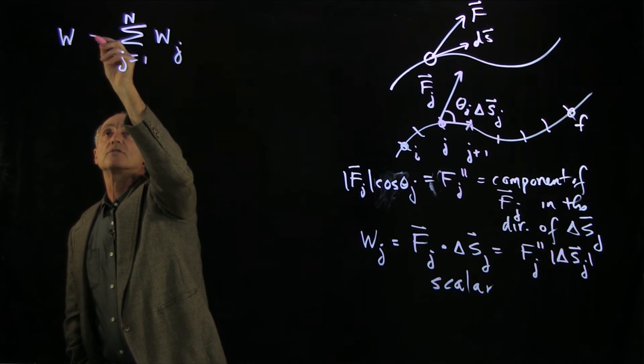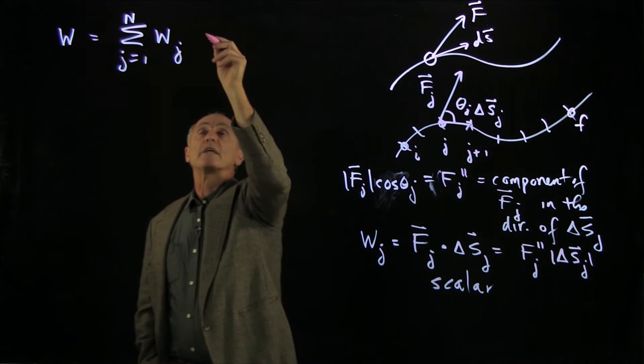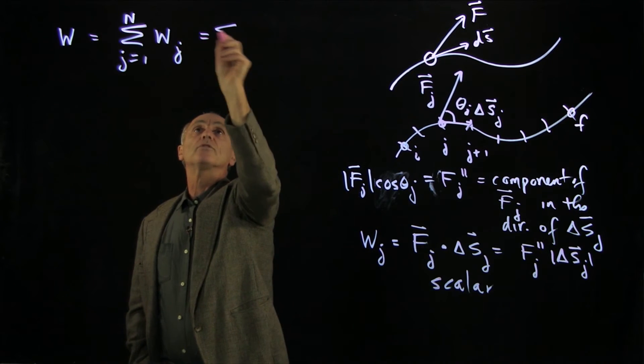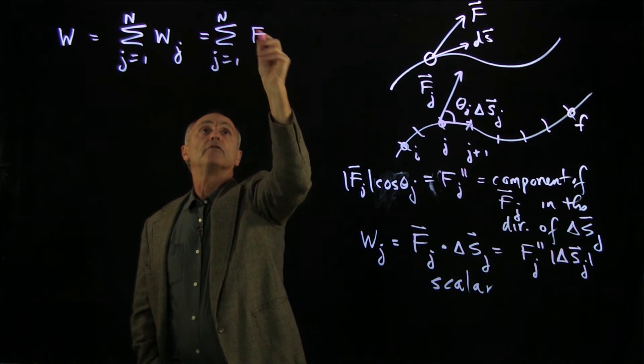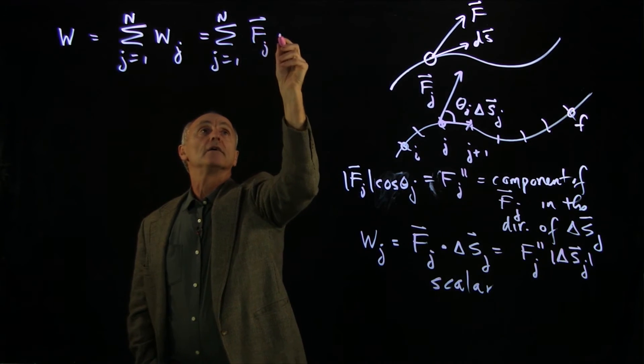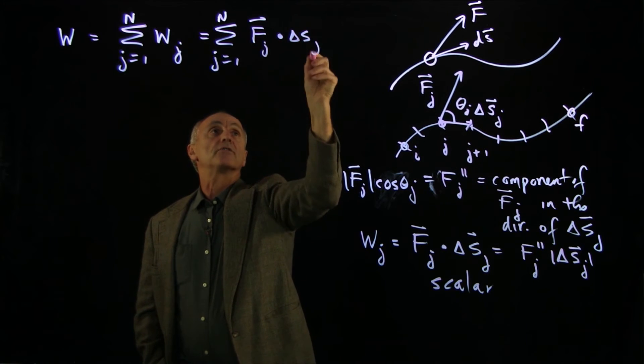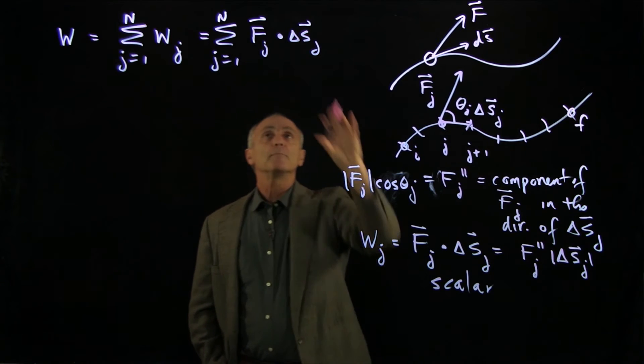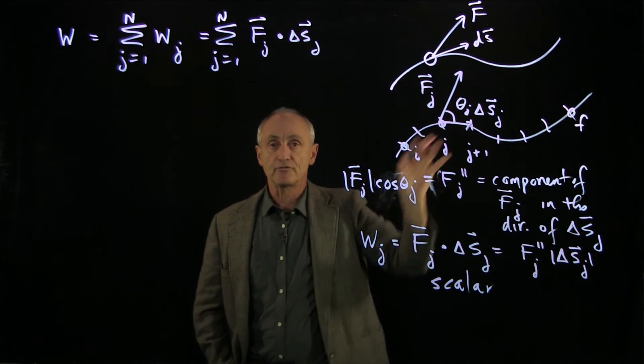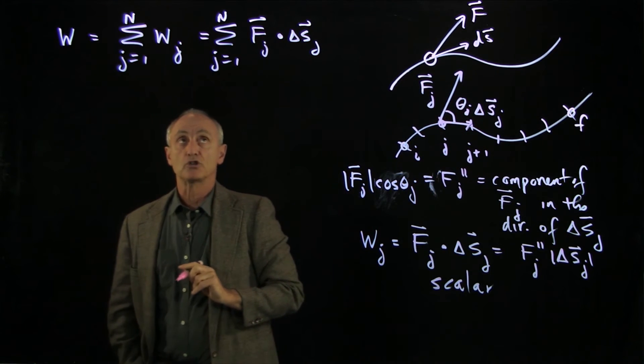And right now, we're going to call this W. It's just that scalar sum. And that's equal to the sum, j goes from 1 to n, of Fj dot delta sj. So now we'll use the vector dot product, because we already know that this is how much of the force is in the direction of the motion.